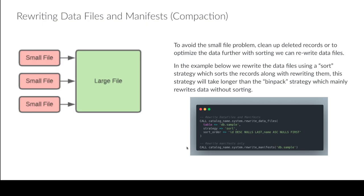When rewriting metadata, sometimes you might want to rewrite just the manifest. Maybe your data files are big enough but you have too many manifests — perhaps due to very frequent streaming where you're writing new manifests every time you append data, but each time you're getting 128 MB, so you don't need to rewrite the data files. Ten data files you've just written could have been listed under one manifest. There's a rewrite_manifest procedure for when you want to make your manifests more efficient.